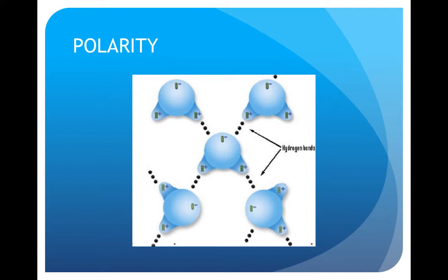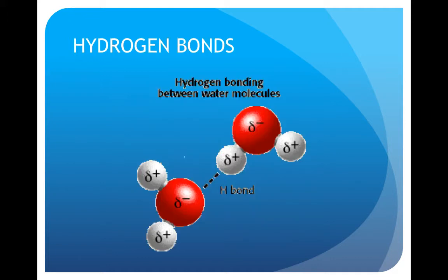The electrical attraction that occurs between the positive sides of one water molecule and the negative sides of another water molecule is called a hydrogen bond. Hydrogen bonds hold water molecules together and are responsible for the unique properties of water. A water molecule can form a maximum of four hydrogen bonds with other water molecules.